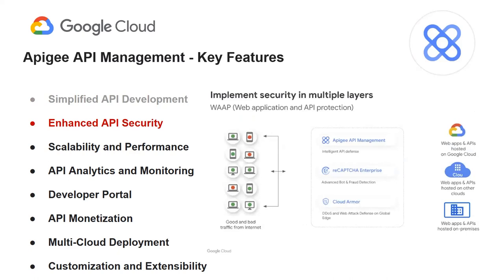Apigee offers robust security features that protect APIs from potential threats, including authentication, authorization, and threat protection mechanisms. This allows organizations to implement industry-leading security best practices such as OAuth, API key management, and SSL encryption, ensuring the security and privacy of APIs and data. In this reference architecture, we can see that Apigee API management adds an additional layer of security on top of Cloud Armor and reCAPTCHA Enterprise.